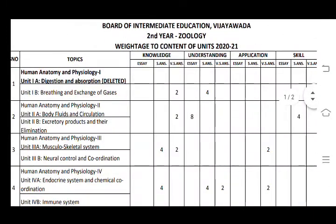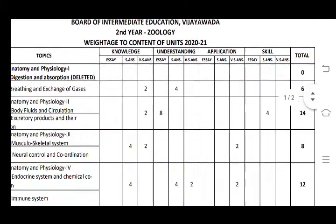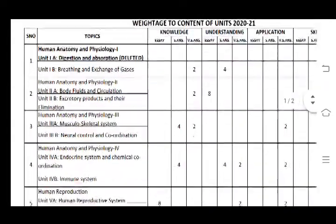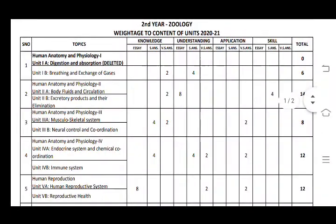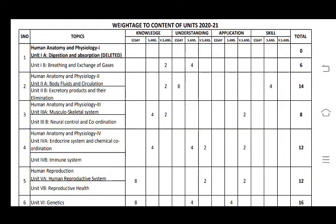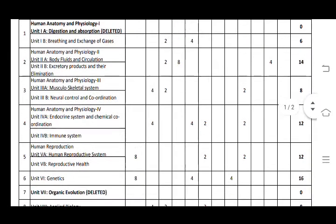So Human Anatomy & Physiology Unit 1 Part A — I have 10 questions total. And next Unit 1 Part B is Breathing & Exchange of Gases — this has 6 marks. Unit 2 is Anatomy & Physiology Part 2: Body Fluids and Circulation, and Excretory Products and their Elimination. So Unit 1 and Unit 2 together have a total of 14 marks.